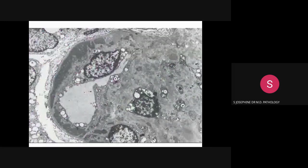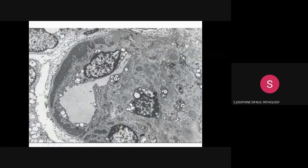On electron microscopy for class 4, apart from mesangial deposits, we see circumferential sub-endothelial electron dense deposits incorporated into the glomerular capillary wall. There is sub-endothelial neomembrane formation between the endothelial cells and the deposits, and marked mesangial expansion with numerous electron dense deposits in the mesangium.